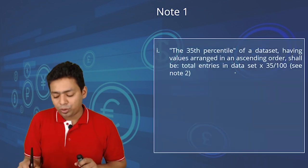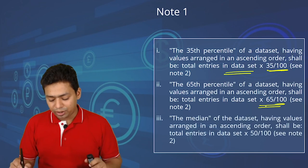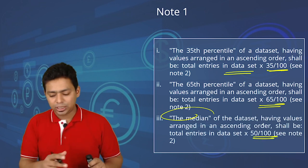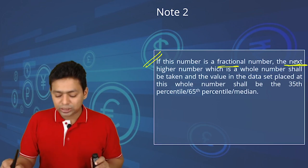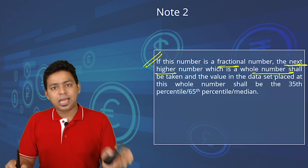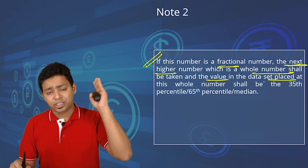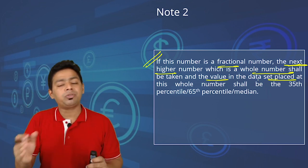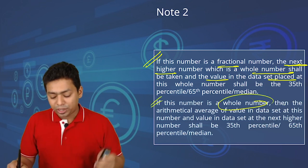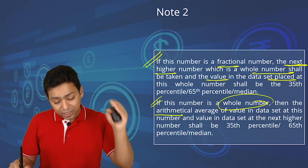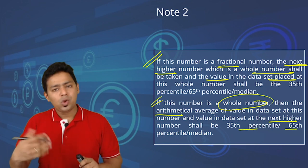The 35th percentile is computed as: total samples × 35/100. The 65th percentile is total samples × 65/100. The median is total samples × 50/100. Whenever the result is a fractional number, take the next higher whole number as the position in the data set. This applies at the 35th, 65th, and median calculations. If the result is already a whole number, take the arithmetic average of the value at that position and the next higher position.